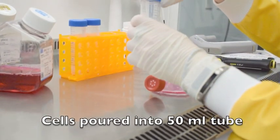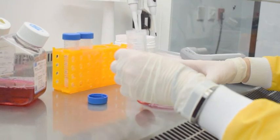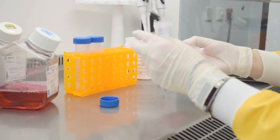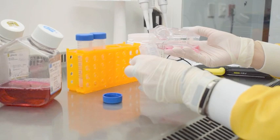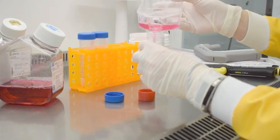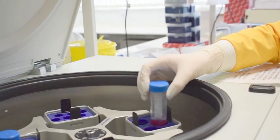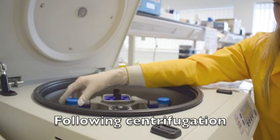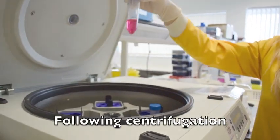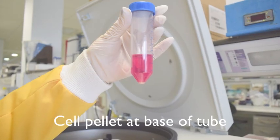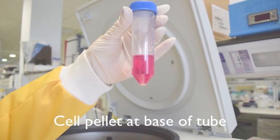The cell suspension is then transferred to a 50ml centrifuge tube and centrifuged for 5 minutes at 154 RCF. The cell pellet should be clearly visible following centrifugation.